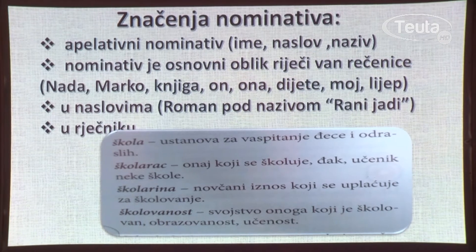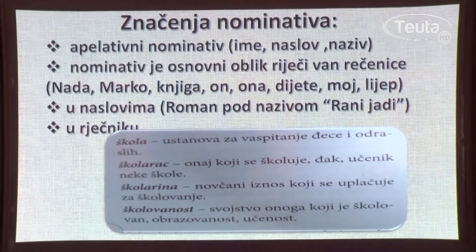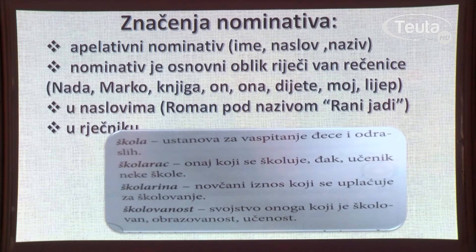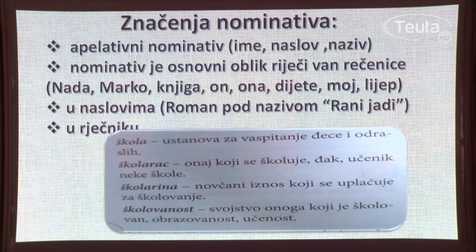Osnovna značenja nominativa su apelativni nominativ, što znači ime, naslov ili naziv. Sve oko nas ima svoje ime — ljudi, stvari, predmeti, pojave, bića — pa je njihovo ime u nominativu. Vidite u zagradi vlastita imena: Nada, Marko; zajedničku imenicu knjiga; zamjenice on, ona; imenicu dijete; prisvojnu zamjenicu moj; pridjev lijep.